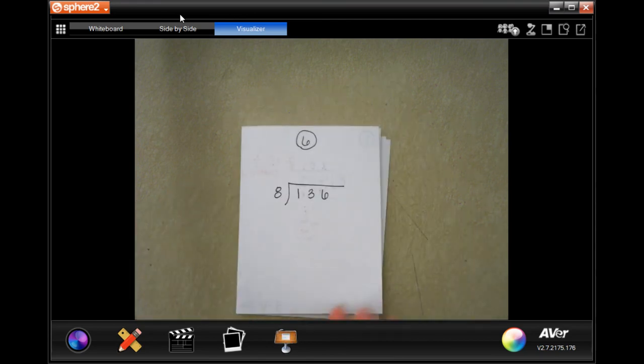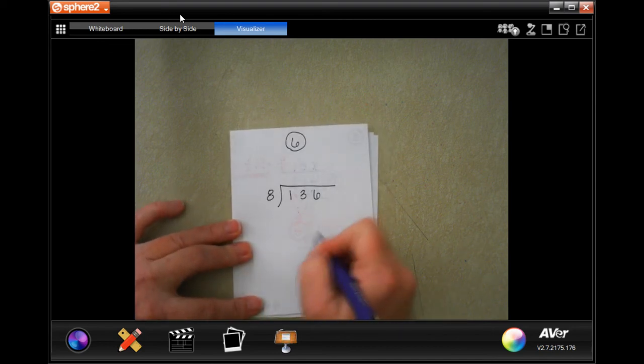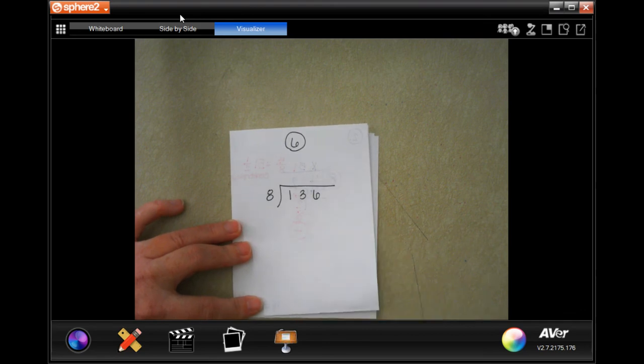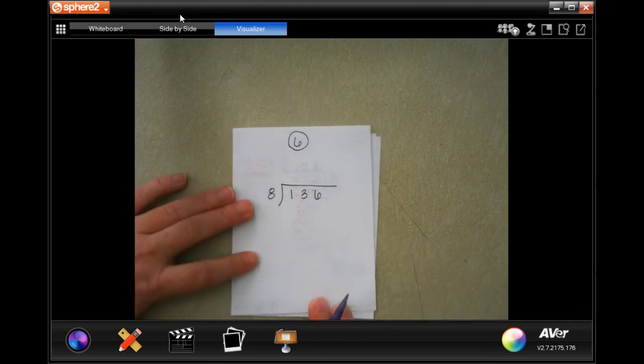Number 6. Cassie is building a patio. He has 136 bricks. He wants the patio to have 8 rows, each with the same number of bricks. How many bricks will Cassie put in each row? Now, would we make rows of 8 until we get to 136? Yes. But that would be a very long process, so we are just going to divide.